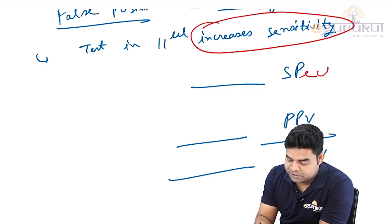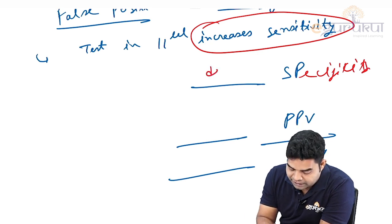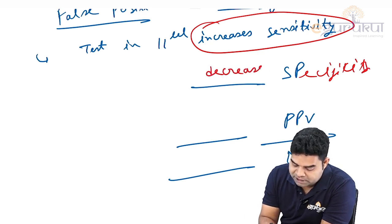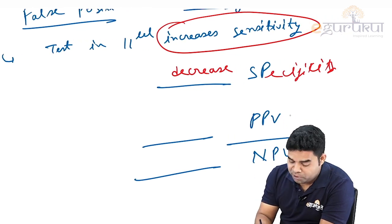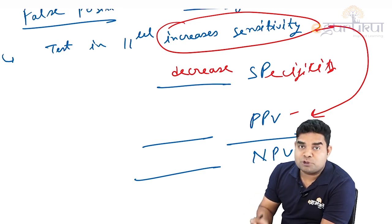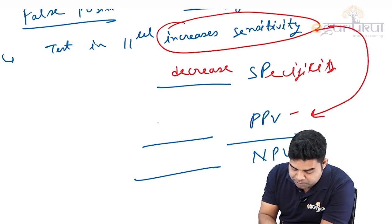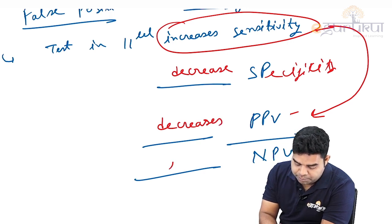Specificity is just opposite, so that will decrease. Test in parallel will decrease specificity. And what is the relation of PPV with sensitivity? They are in a way inversely proportional, so when sensitivity is increasing, it means PPV also decreases. And when PPV decreases, NPV increases.